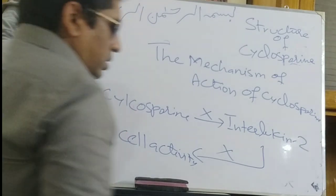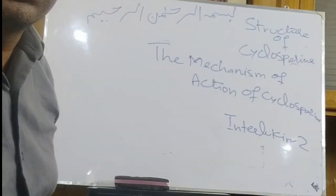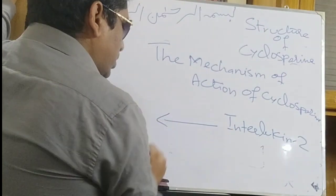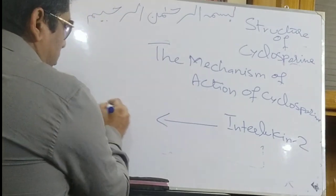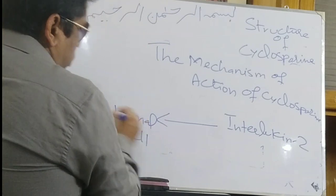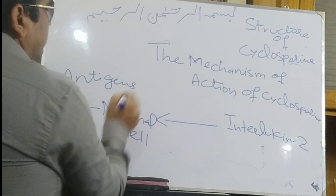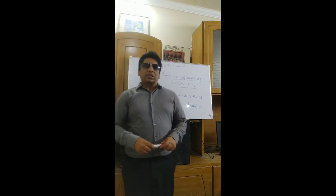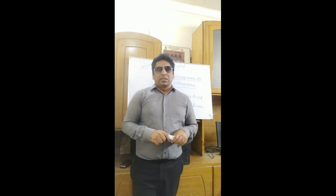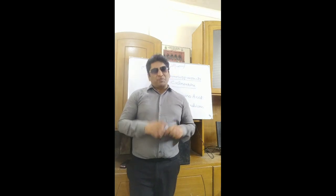What does interleukin-2 do? Interleukin-2 distinguishes normal cells from antigens. It is necessary for initiation of T cell activity. Interleukin is responsible for distinguishing self-cell from foreign antigens.